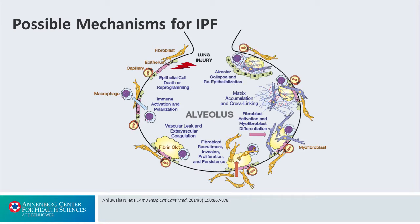And then finally, we see alveolar collapse and re-epithelialization of that region. As it gets sticky and the fibrosis shrinks down like any scar that you would have on the back of your hand, it causes restriction and stiffness in the lung. This is just one of the possible mechanisms that has been proposed to help put the context of the disease into place.